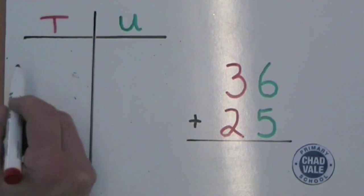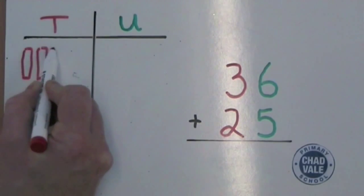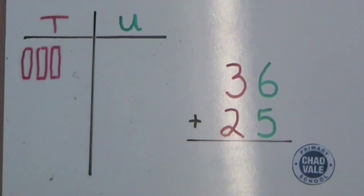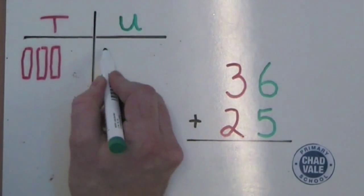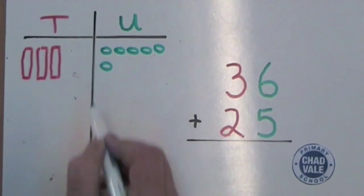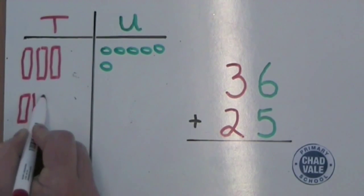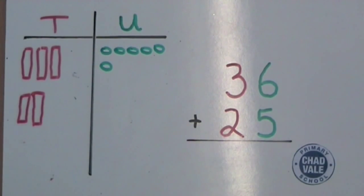First, we draw 36 with three tens and six units. Underneath, we draw 25 with two tens and five units.